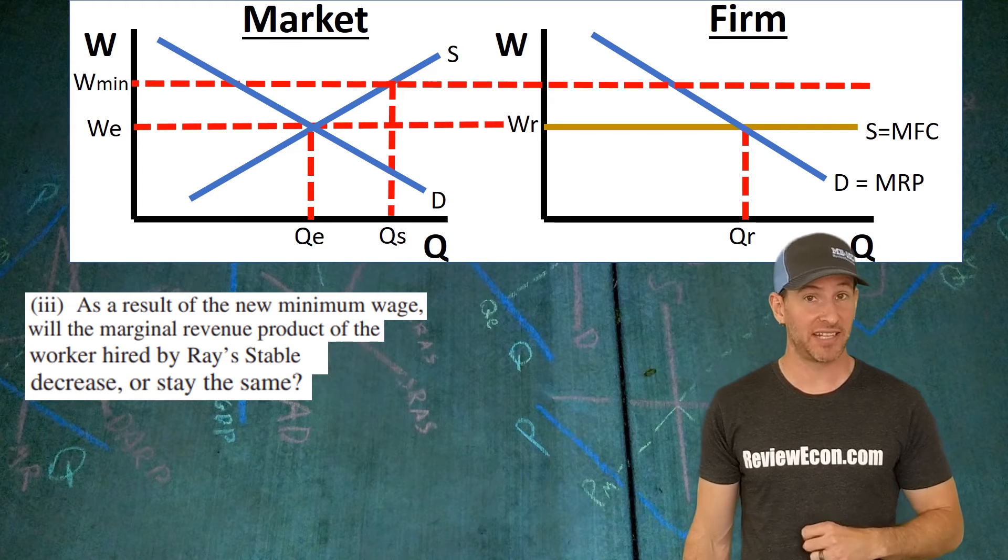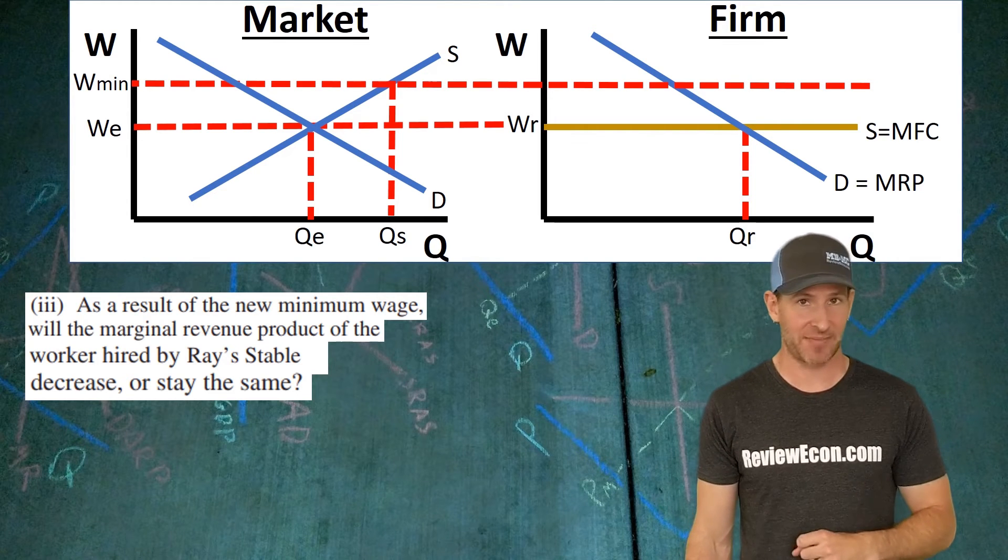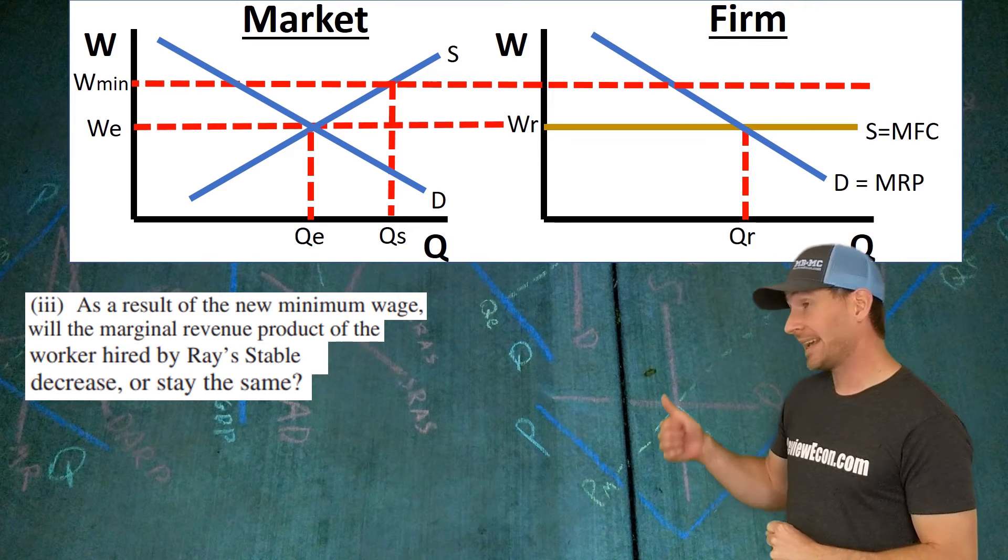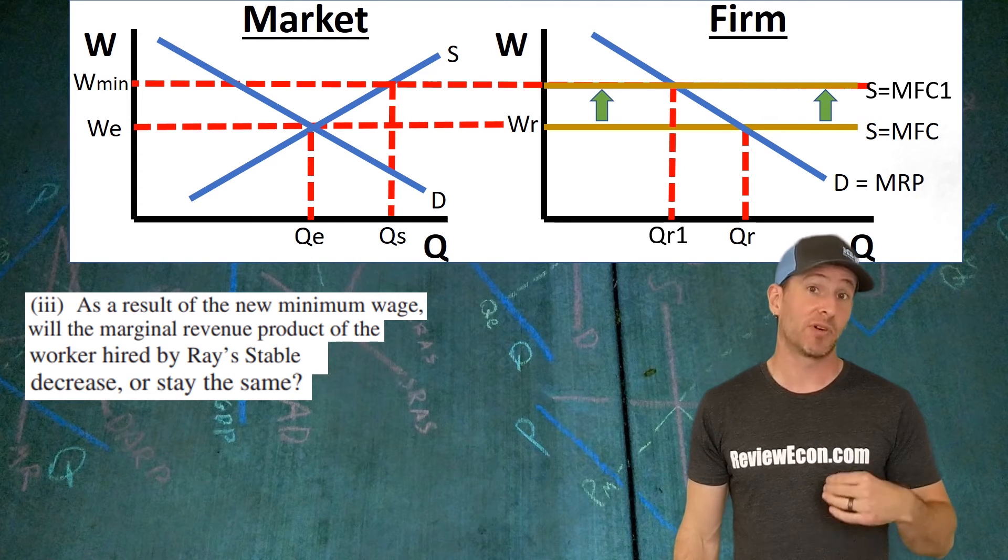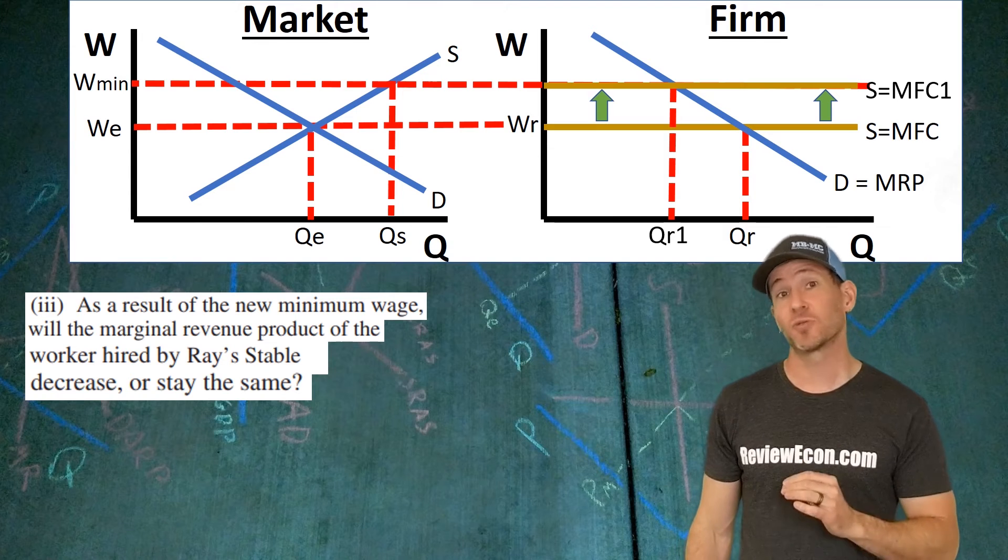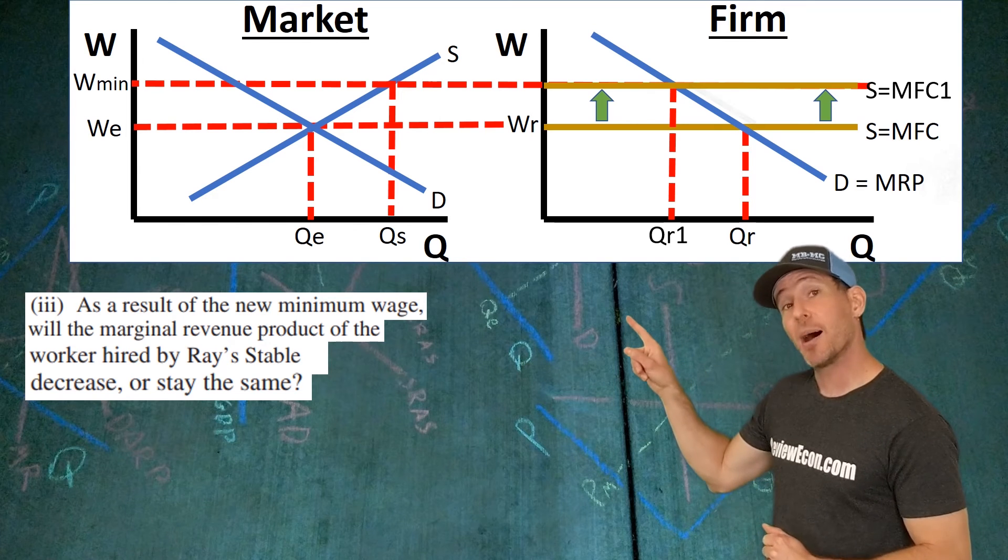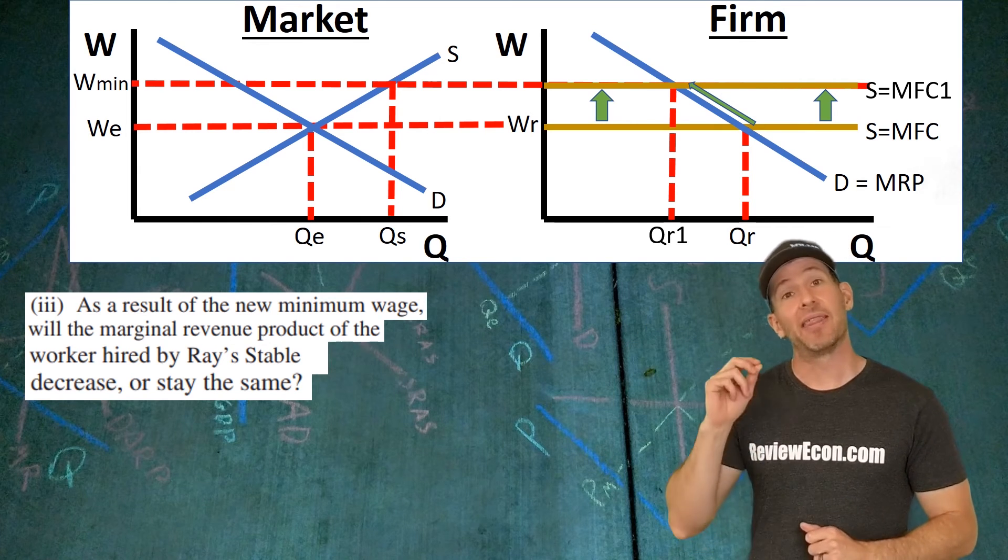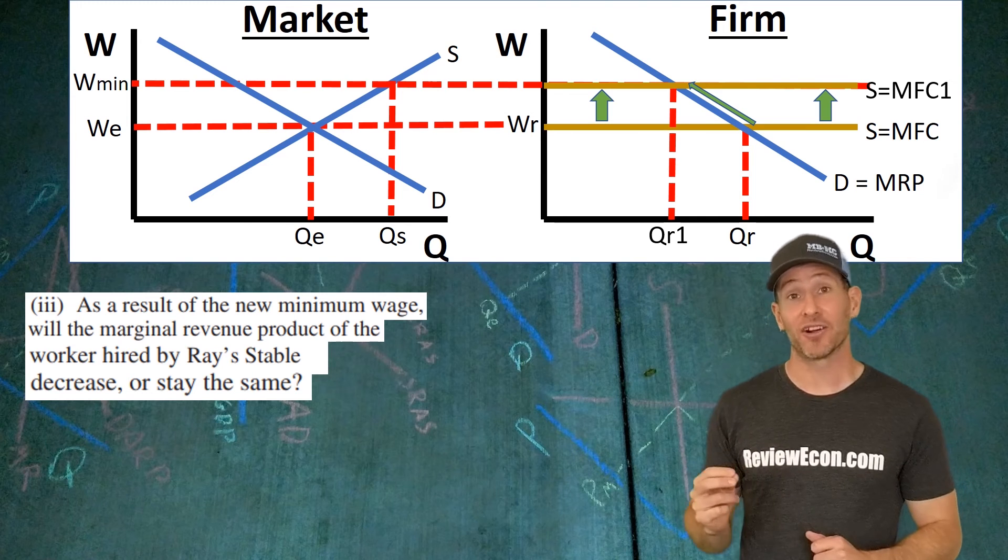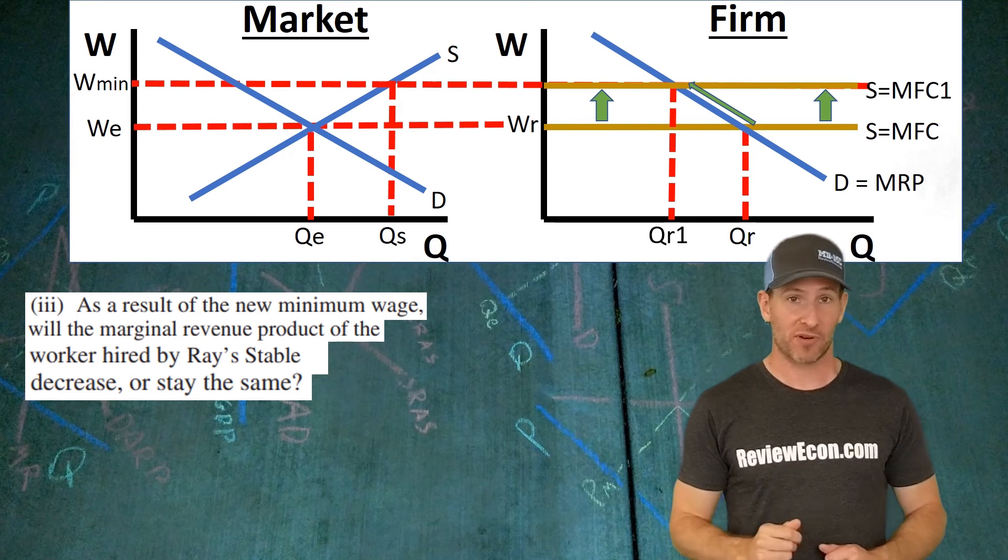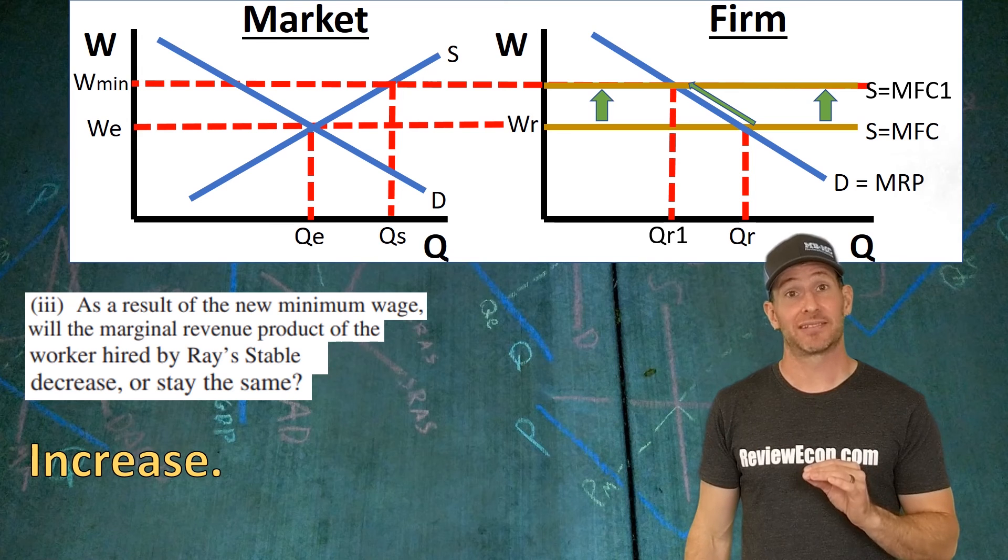For the third section of Question C, we're looking at the impact of the minimum wage on the marginal revenue product of the last worker hired by Ray Stable. The new minimum wage increased the marginal factor cost for Ray Stable. And the number of workers Ray Stable hires is always going to be where the marginal revenue product equals the marginal factor cost. That intersection moved up the marginal revenue product curve. And that means that the new quantity of workers hired has decreased. And that last worker hired is now at a higher marginal revenue product than the previously last hired worker. So all you have to do here is just say increase. And you'll get your point.